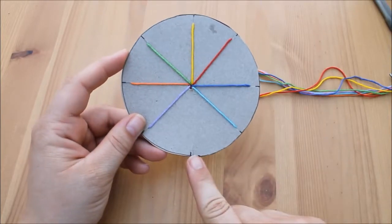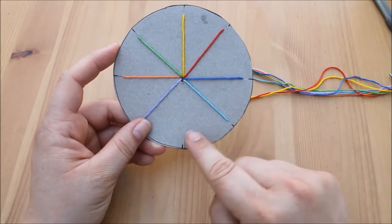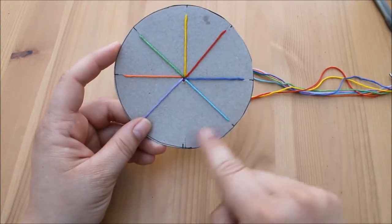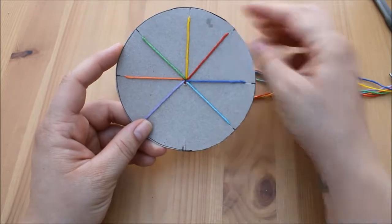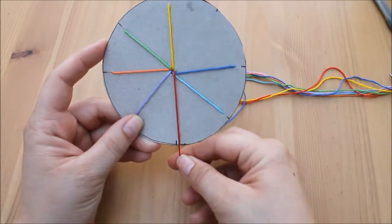So what we do is we take the third yarn. We work clockwise, so we take the third yarn from the bottom and we pull it down and into the groove at the bottom.